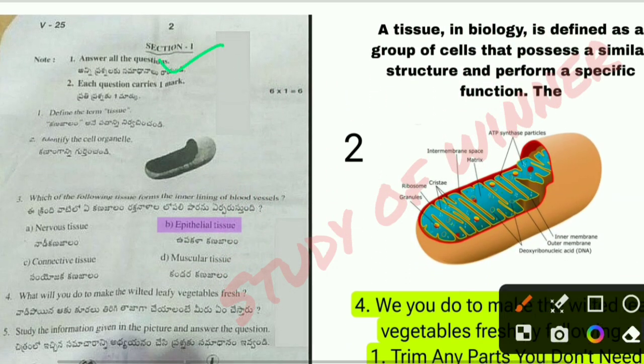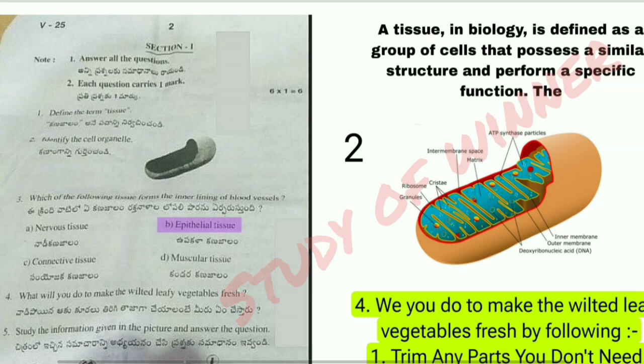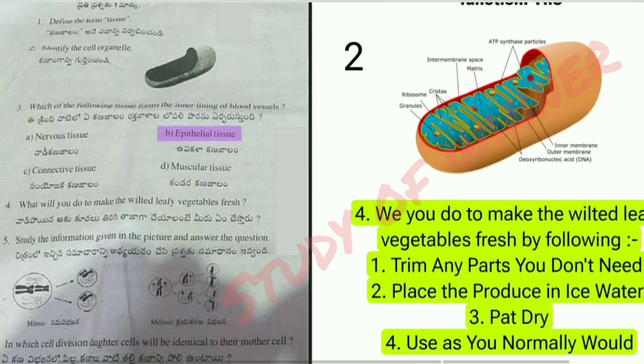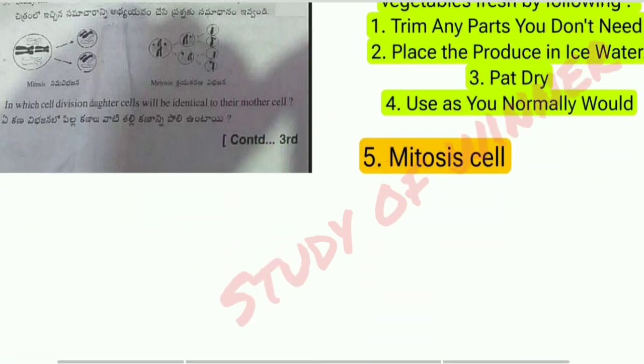You can see your Section 1, and the first question: define the term tissue. You can see this is your answer, and then you can see all the answers. This question paper PDF is available on the channel.